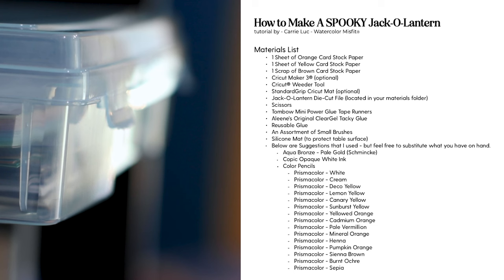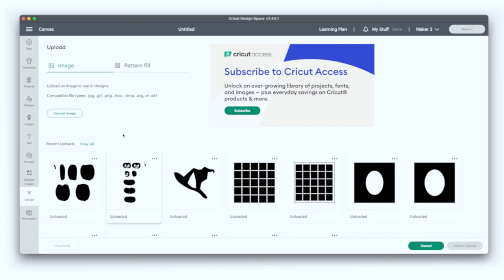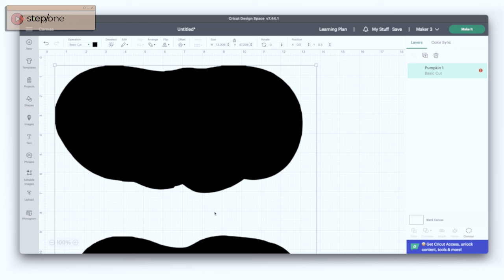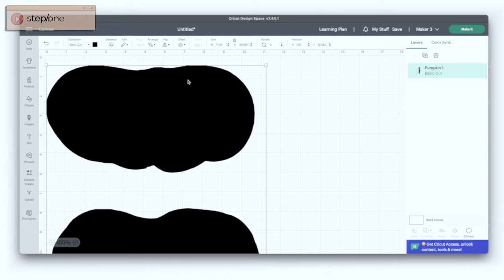Start with uploading the jack-o'-lantern file that I provided for you and add it to your canvas inside of your Cricut design space. Once your canvas opens, resize that pumpkin to about two and a half inches wide to eleven inches tall.